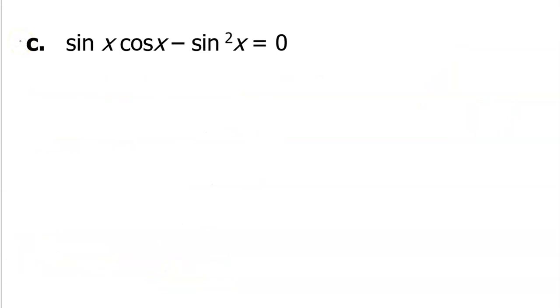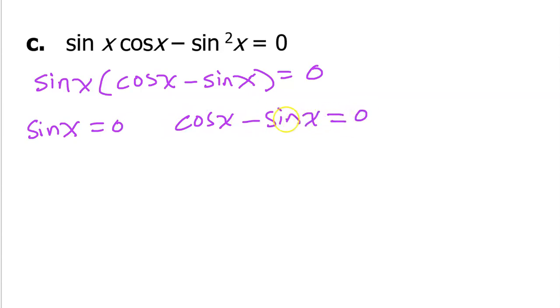Alright. I noticed that we have a common factor. We have sine x and sine squared x. So let's factor sine x out and see what happens. That will leave cosine x minus sine x, which seems a little bit weird, but I'm going to go with it. Let's set each of these factors equal to 0. So if I set sine x equal to 0, and then cosine x minus sine x equals 0. This second one I feel a little bit uncomfortable with, but I think it's going to be okay.